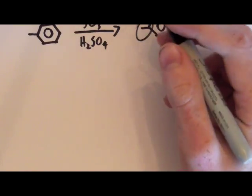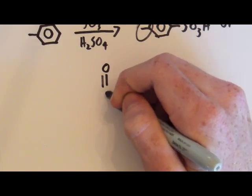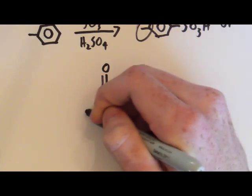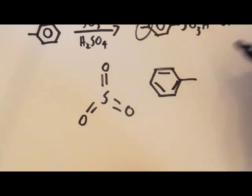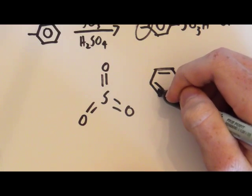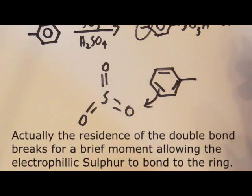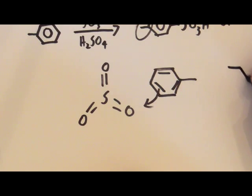All sulfuric acid has some sulfur trioxide in it, and it exists in equilibrium. So what actually happens here is that the toluene ejects one of its electrons out of the double bond. And when it does this, it forms a carbocation, which is what I can draw.